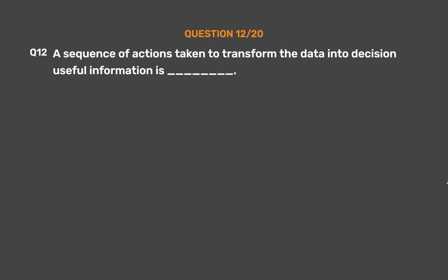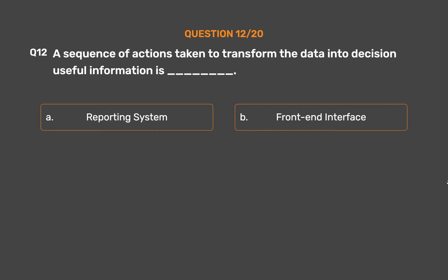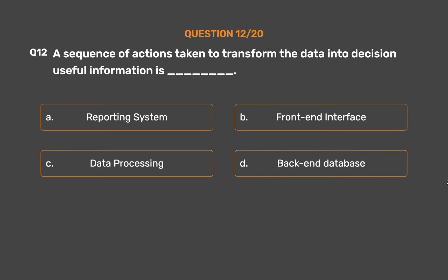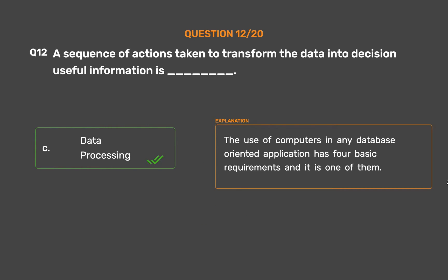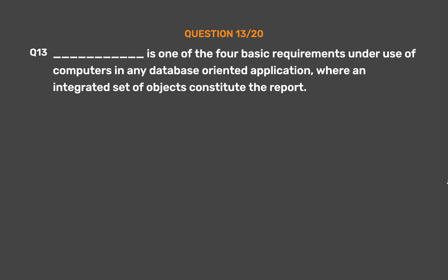Question number 12. A sequence of actions taken to transform the data into decision-useful information is underscore. Option A: Reporting system. Option B: Frontend interface. Option C: Data processing. Option D: Backend database. The correct answer is Option C — Data processing. The use of computers in any database-oriented application has four basic requirements, and data processing is one of them.